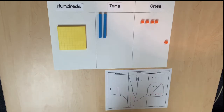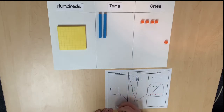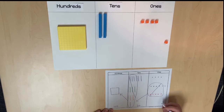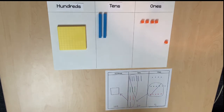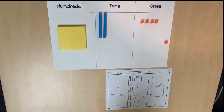Determine the total value represented in each place value and label the pictorial representation. One hundred, plus twenty, plus five, equals one hundred twenty-five. Kevin made one hundred twenty-five cookies.